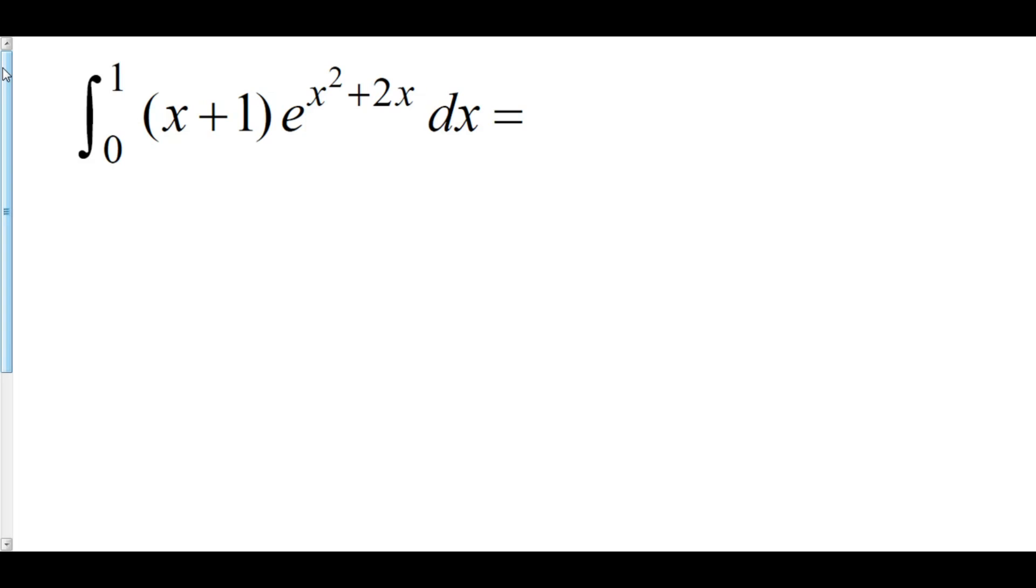Let's put all the components of u-substitution together in one giant final regalia problem. So here we go. We've got the integral from 0 to 1 of x plus 1 times e to the x squared plus 2x dx.